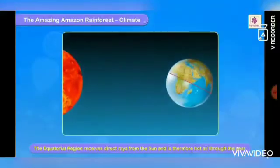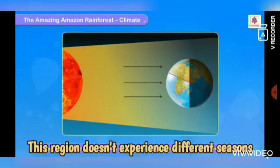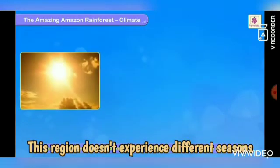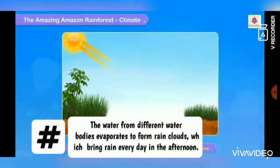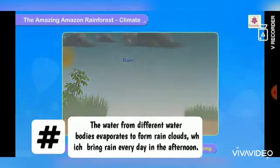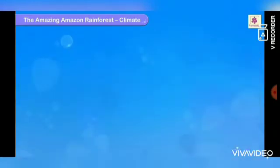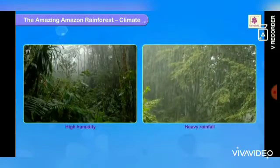Children, what about the climate? We know that the equator receives direct sunlight. So the climate of the equatorial region will be hot and wet throughout the year. This region does not experience different seasons. The sun rays heat up the water, the water evaporates to form rain clouds, and they bring rain every day. So the climate of the equatorial region is hot and wet.